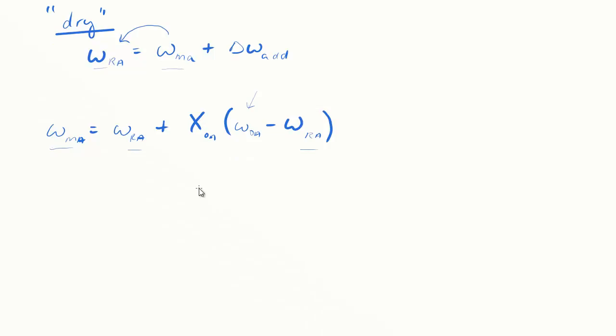Let me go ahead and do that algebra. I'll skip no steps. I'm going to rearrange this equation for mixed air. Taking this term and subtracting it, we get omega_RA minus delta omega added equals omega_RA plus X_OA omega_OA minus omega return air. That term will cancel with that term.